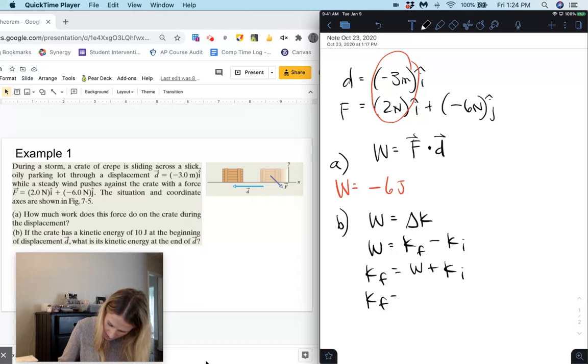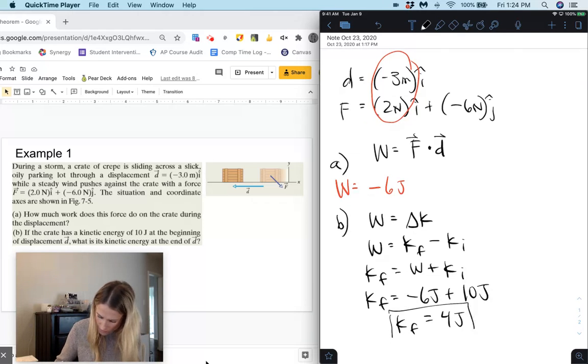Plugging in my numbers, the work done on the object was negative 6 joules plus my initial kinetic energy which was 10 joules. So that means my final kinetic energy is 4 joules of energy.